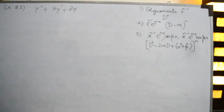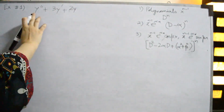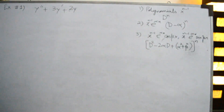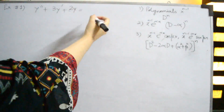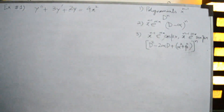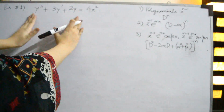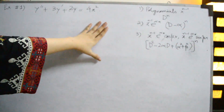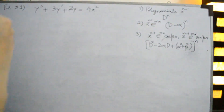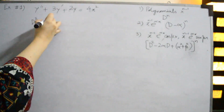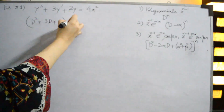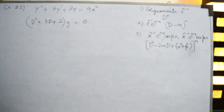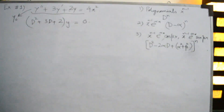The first example is y'' + 3y' + 2y = 4x². First we write the annihilator operator for the homogeneous side, then find the annihilator operator for the non-homogeneous side, and finally multiply all annihilator operators together. The annihilator operator for the homogeneous part is (d² + 3d + 2) applied to y equals zero, which gives us the complementary solution.